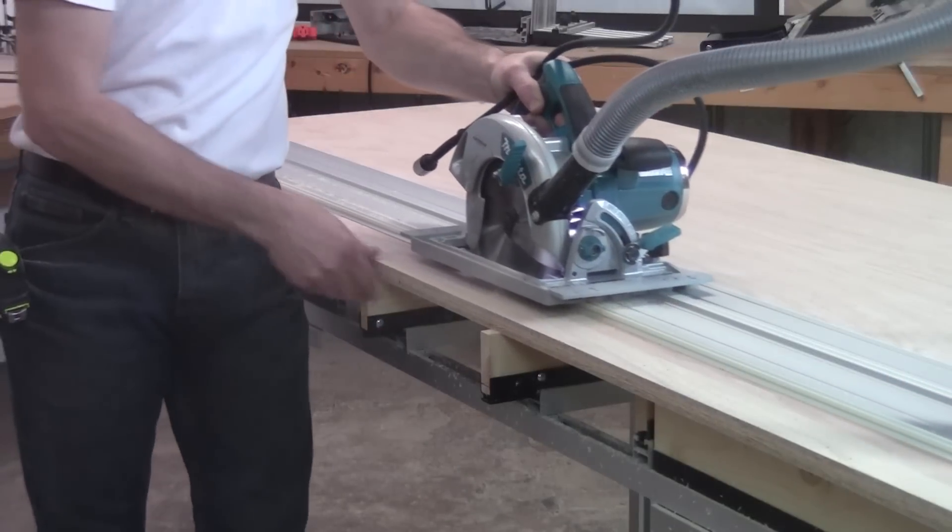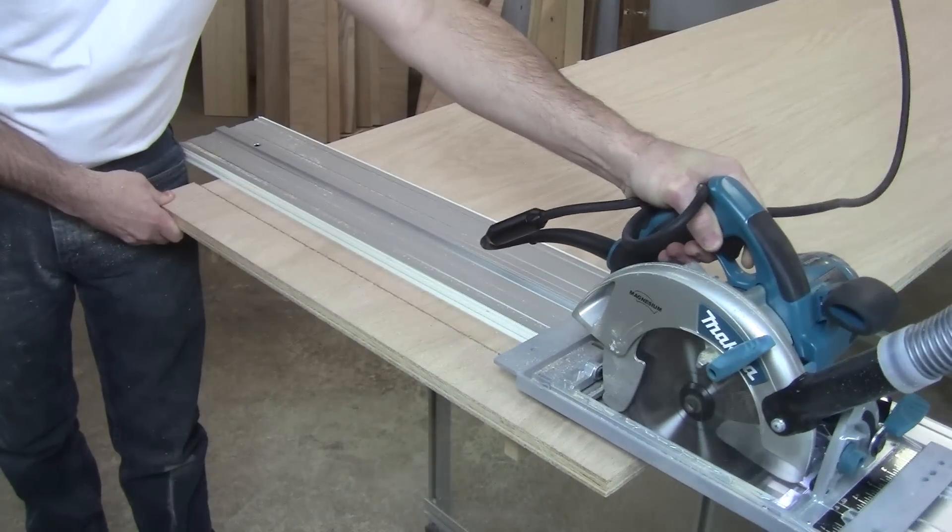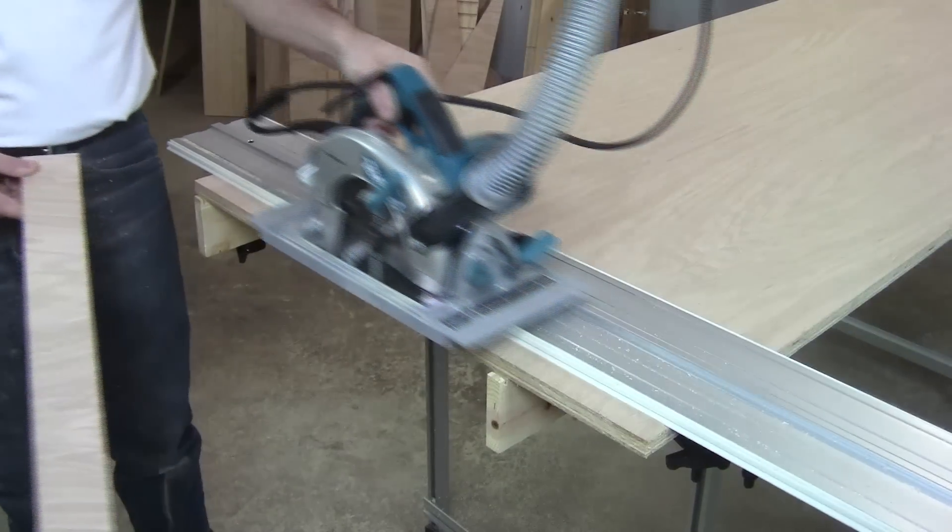The EZ Smart Track Saw System gives you absolutely straight cuts with virtually zero tear out or chipping, all with the circular saw of your choice.